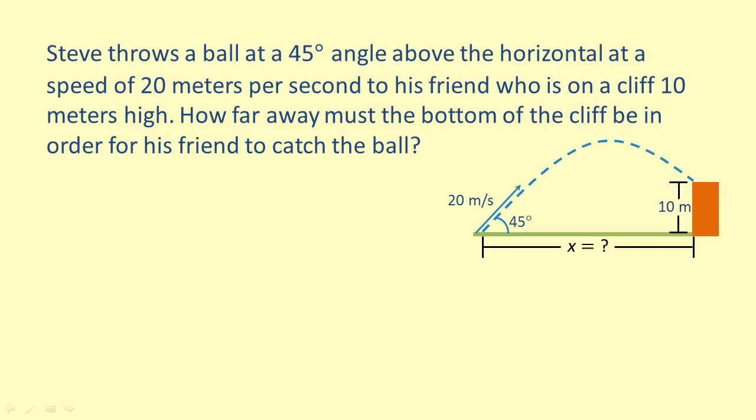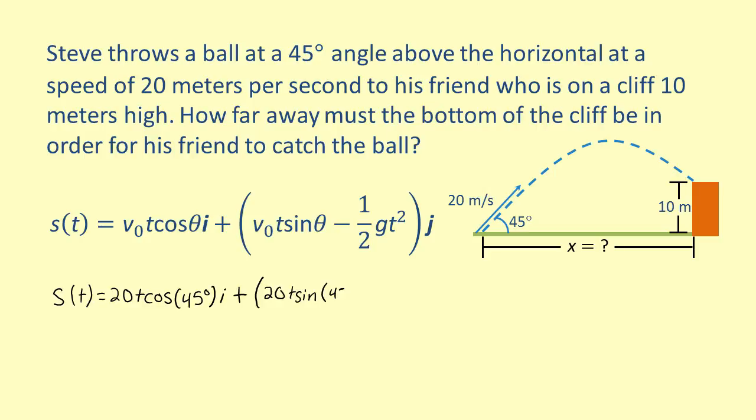We want to know how far away the cliff is. We know the position equation s, so let's substitute our known values in. We know v0 as well as theta and g. Substituting those values into the function and simplifying, we get s equals 10√2ti plus the quantity 10√2t minus 4.9t squared.